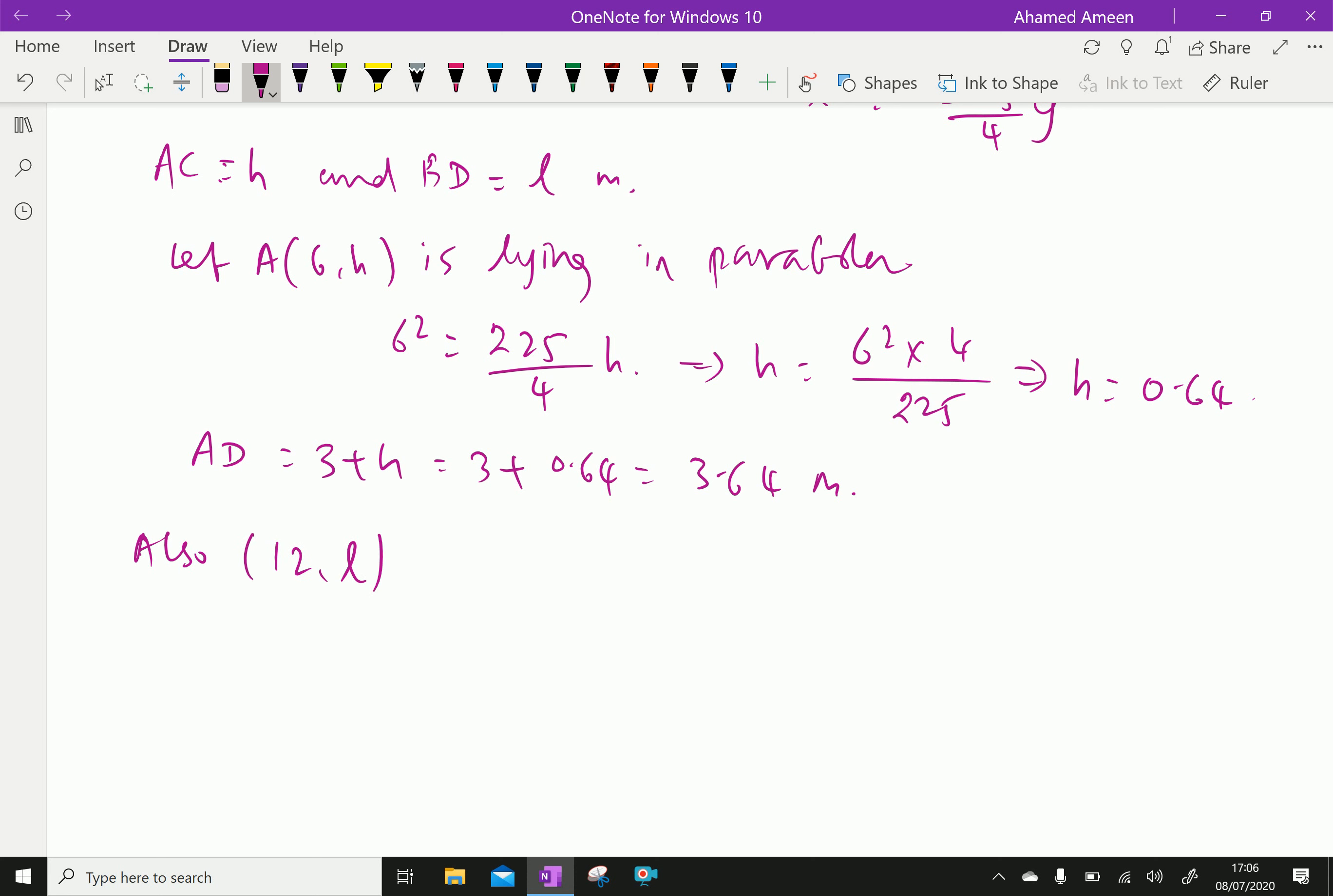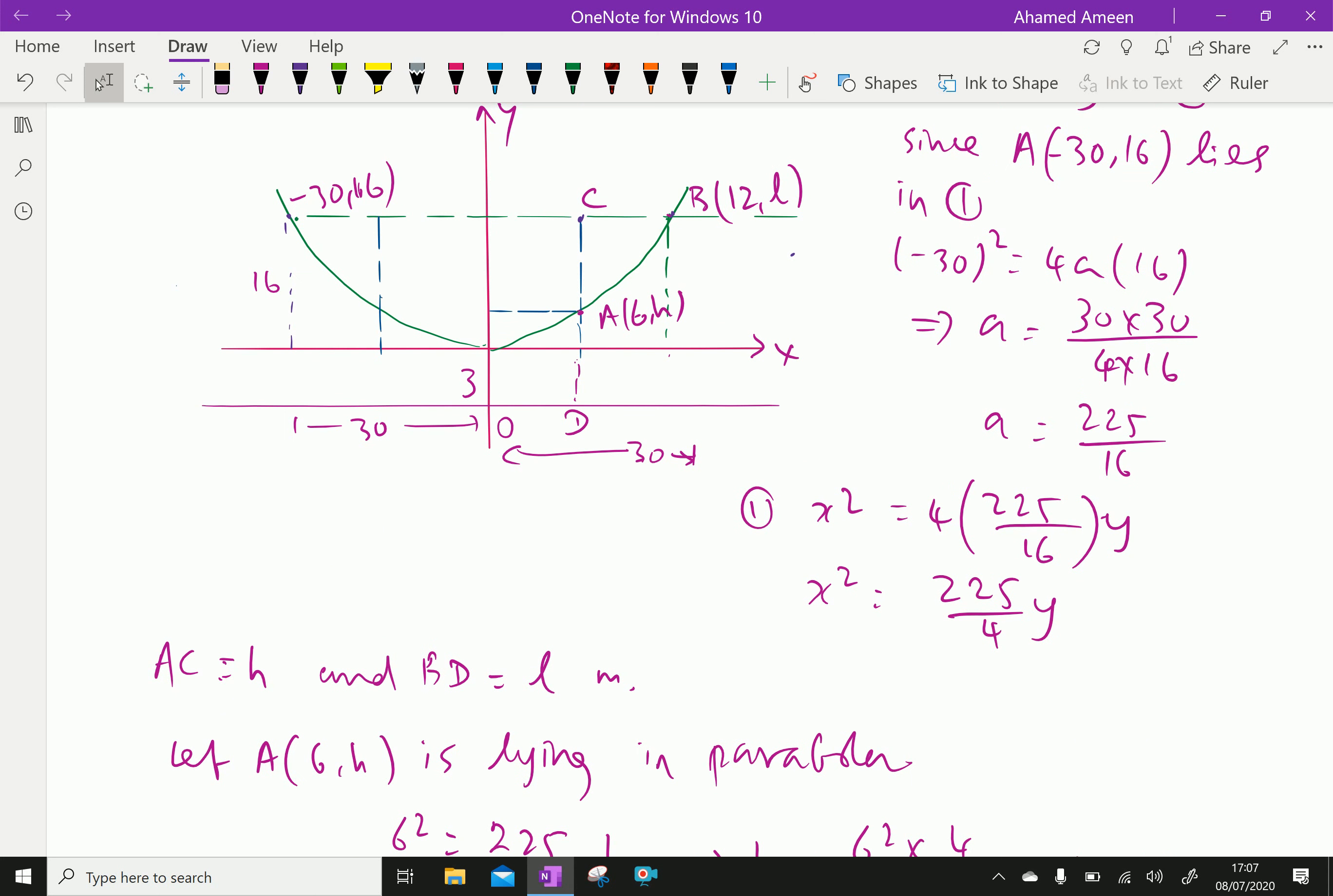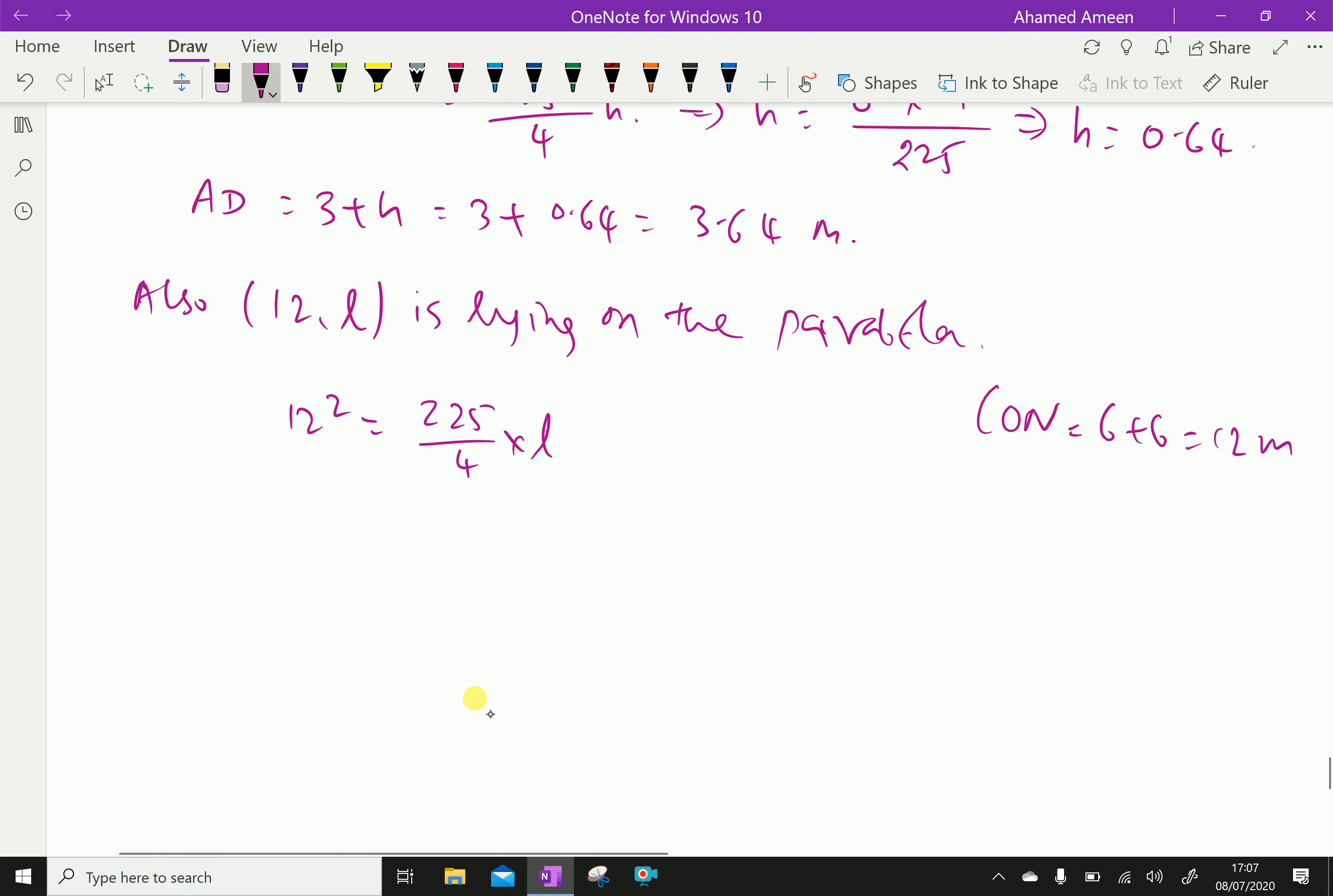Here also the point 12 comma l is lying on the parabola. 6 plus 6 is 12 meter. Therefore we can write 12 square, that is x square equal to 225 over 4 times l. Therefore which gives l equal to 12 square times 4 over 225. By calculation this is 2.56.